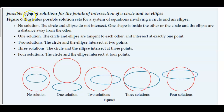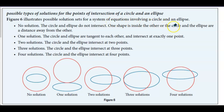Here we have possible types of solutions for the points of intersection of a circle and an ellipse. Figure 6 illustrates possible solution sets for a system of equations involving a circle and an ellipse.